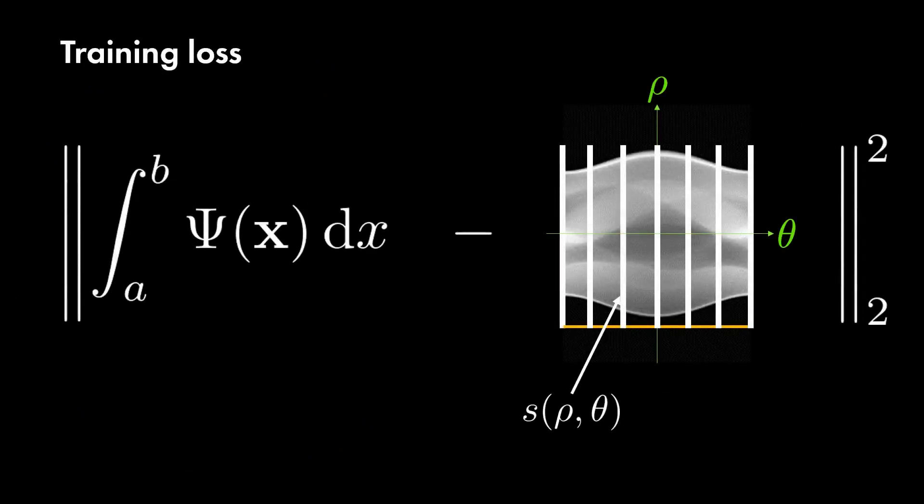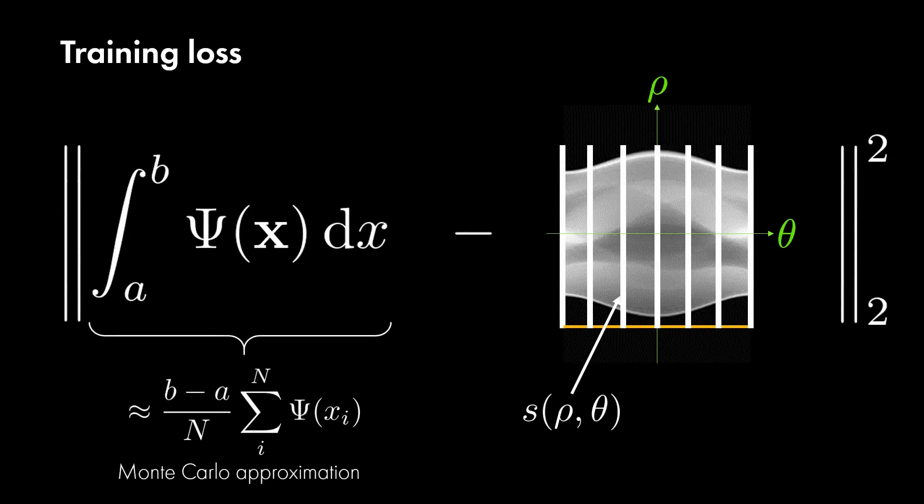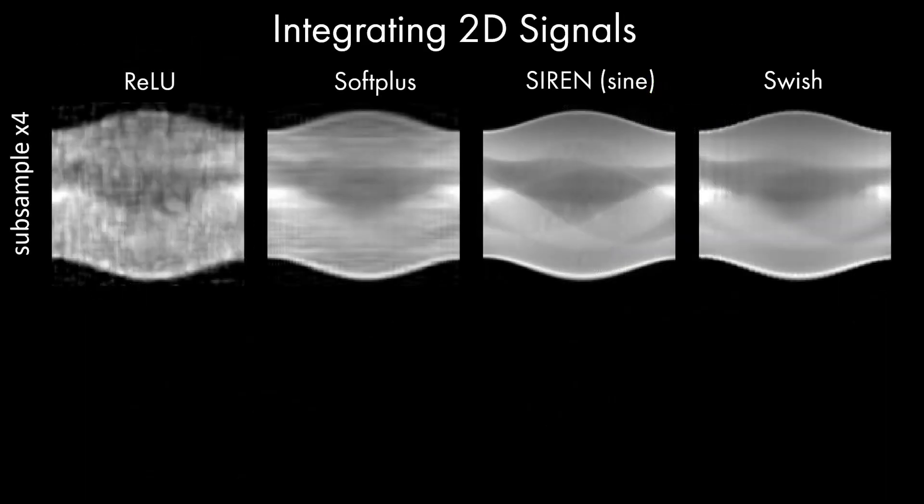During training, the grad network is supervised directly on the sparse projections by approximating the integral with Monte Carlo sampling. After training, we reassemble the integral network, and evaluate the integrals corresponding to the projections at all angles. This allows us to in-paint the missing projections.